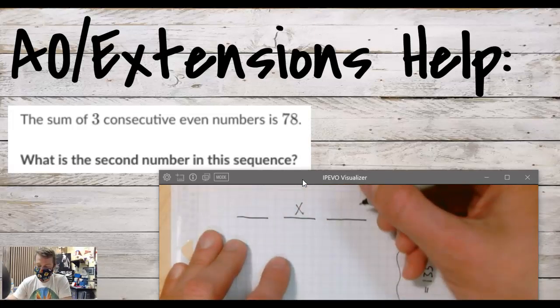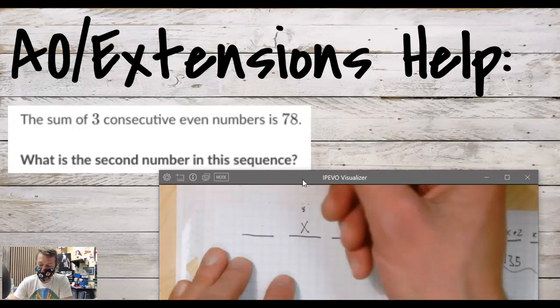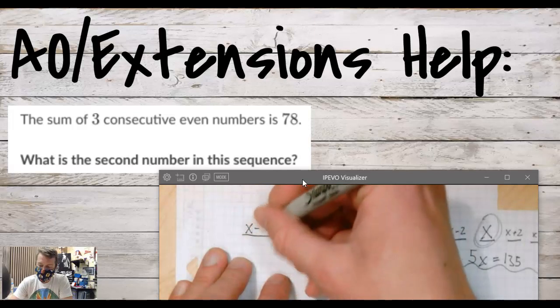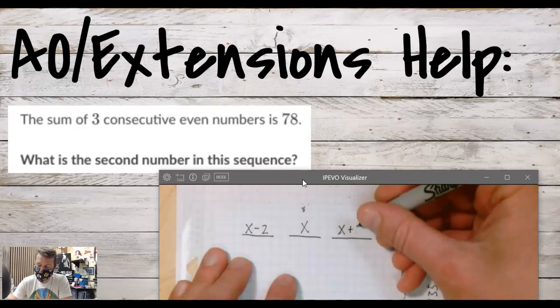Now if we're talking about even numbers, let's say this was 8 or something. How do I get to the even number beneath it? Subtract 2. How do I get to the even number ahead of it? Add 2.